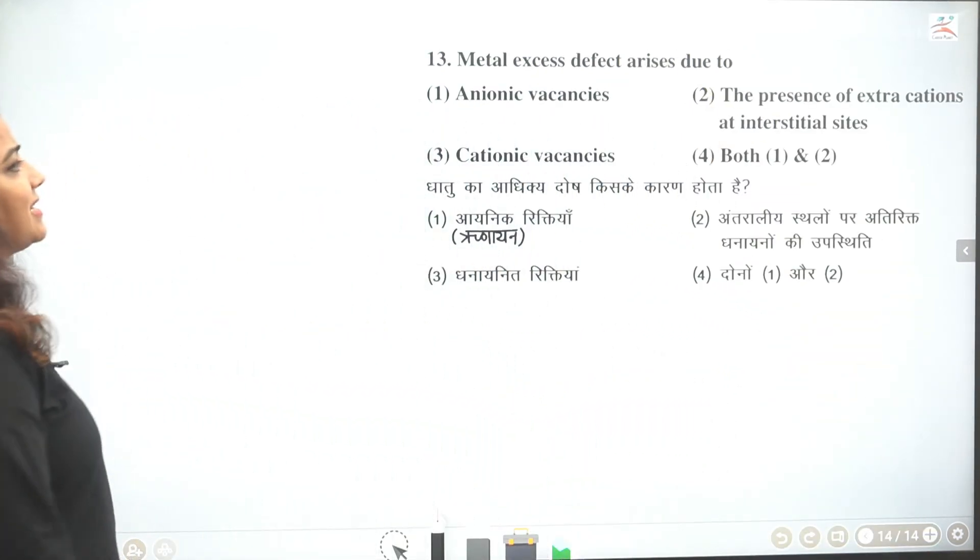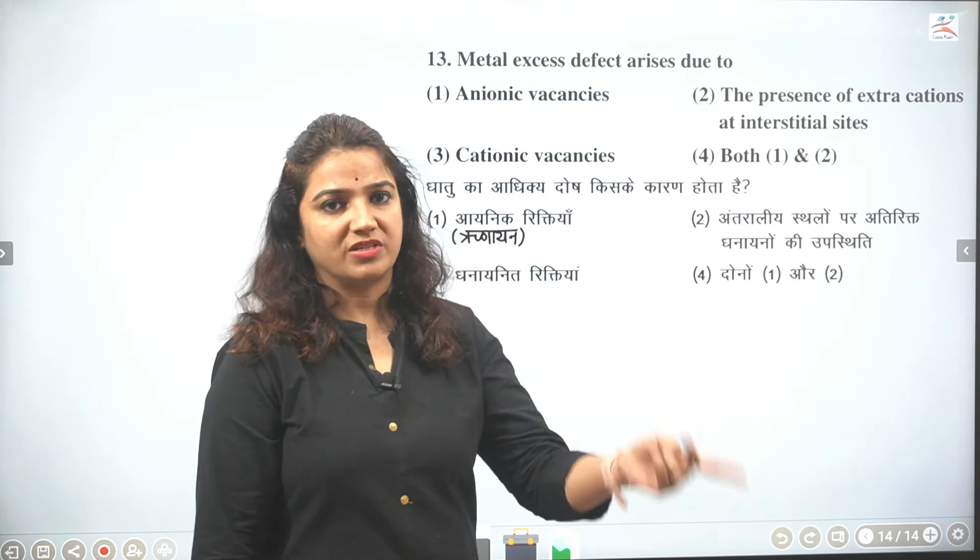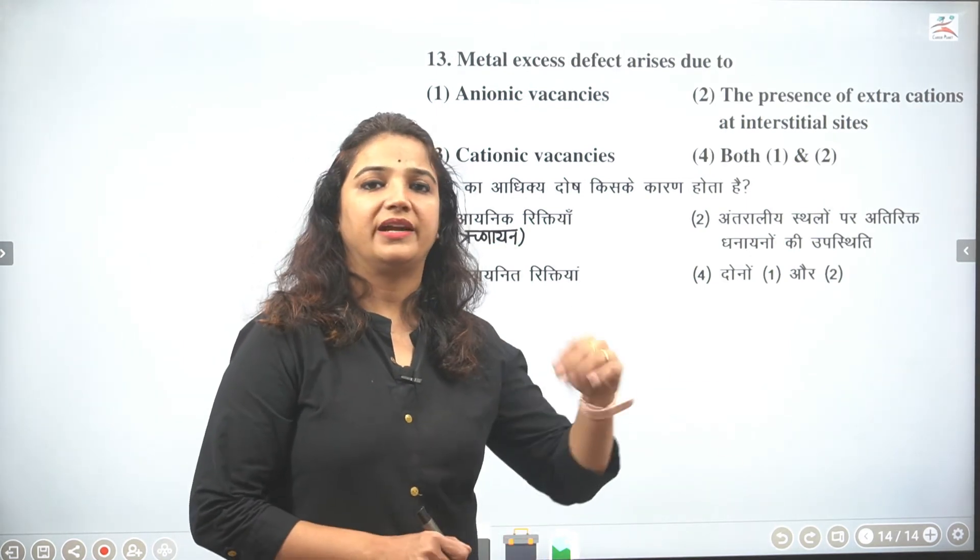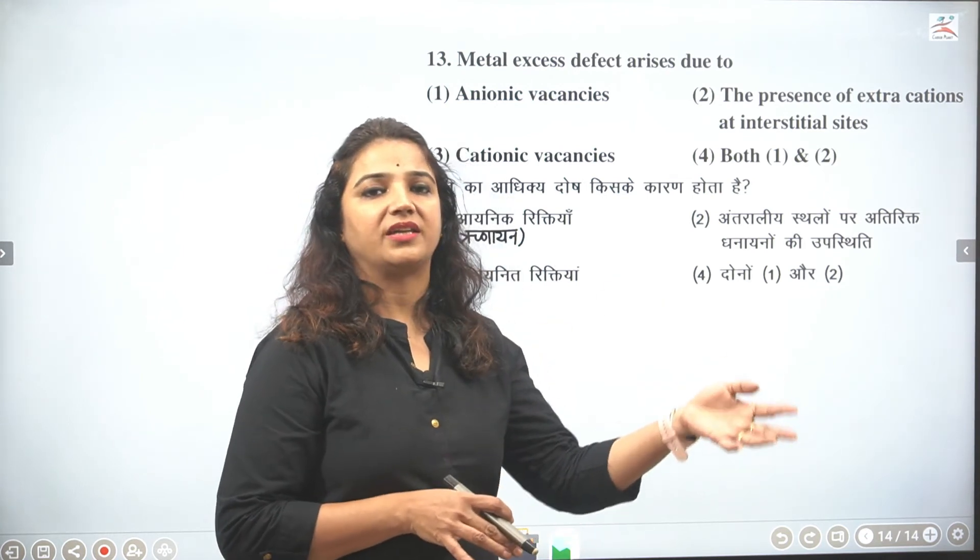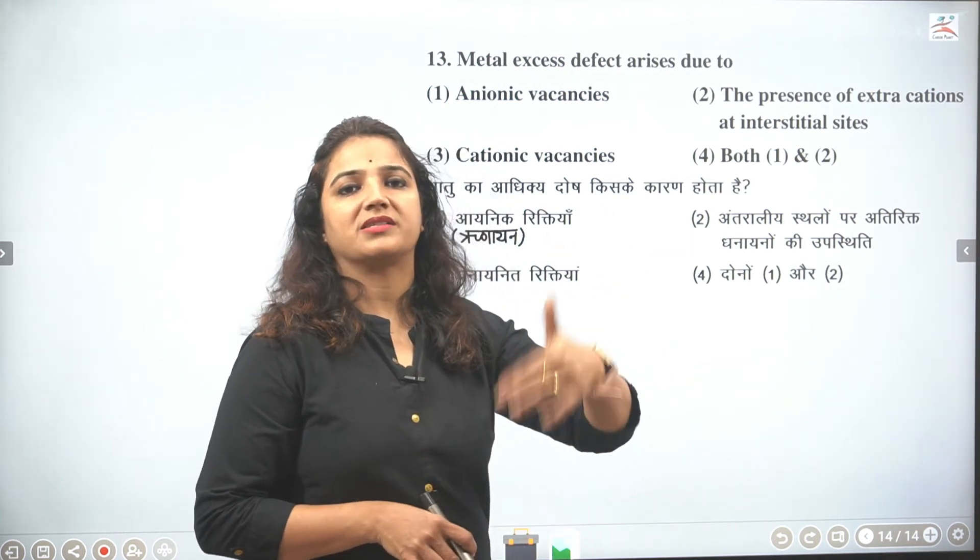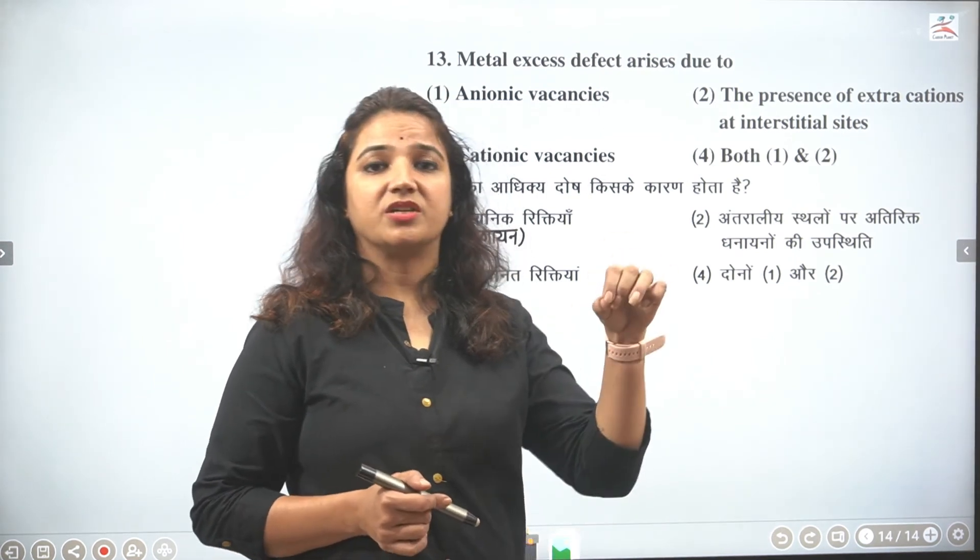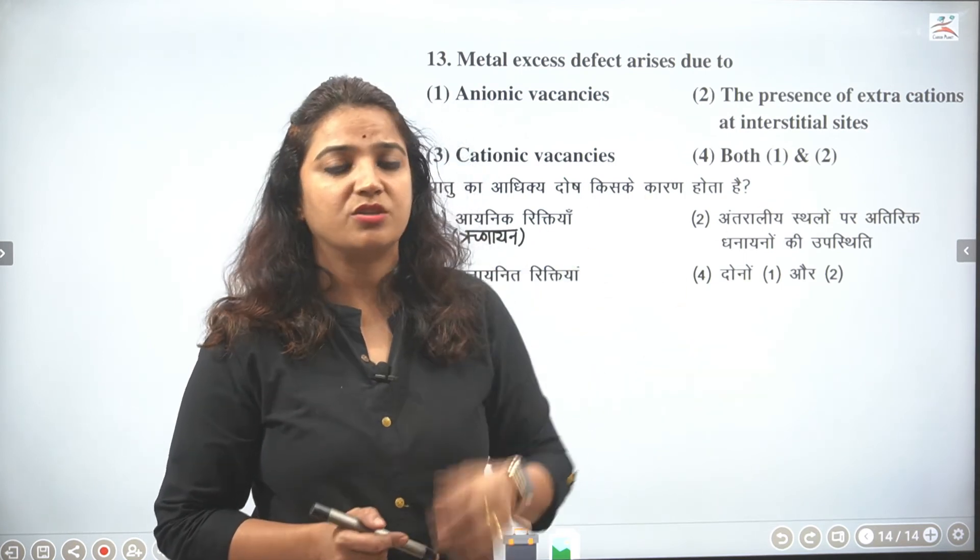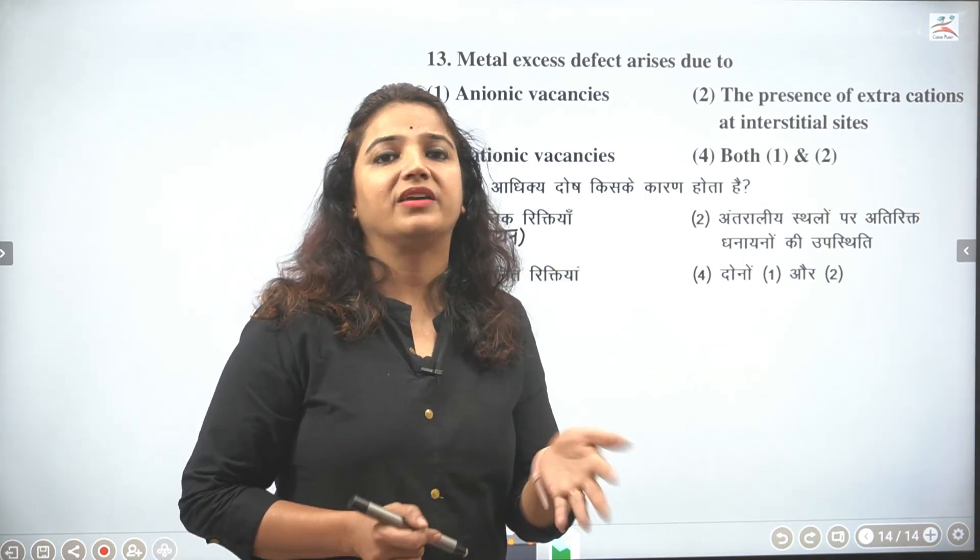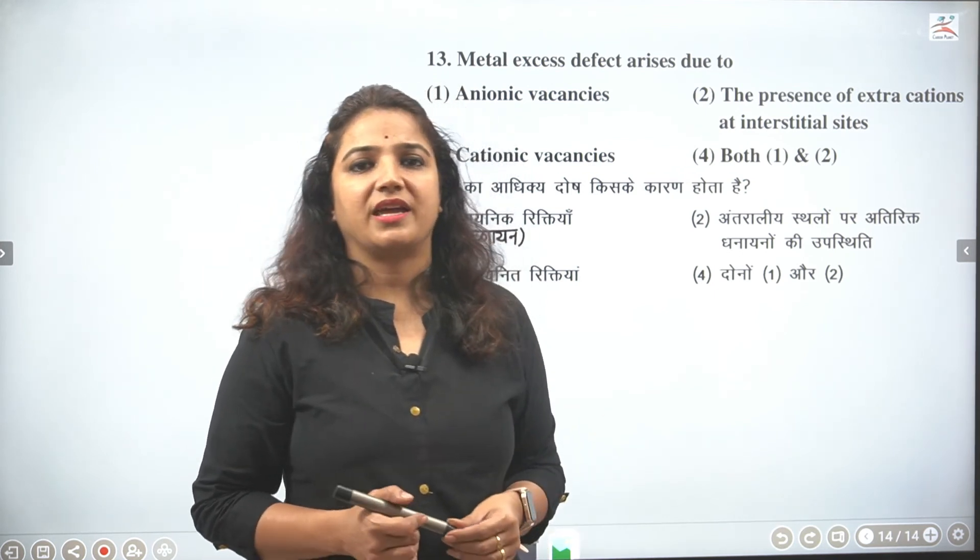Now metal excess defect arises due to. Ab accho metal zyada hai kyunki minus kam hai. Ab iski do wajah ho sakti hai. Ya toh negative part jo hai metal plus aur anion jaise ki anion apni jagah chhodke crystal out of the crystal. Tab bhi ho sakti hai. Toh hum kahenge crystal apni jagah chhodke anion apni space out of the crystal chala gaye. Toh anion vacancy ki wajah se metal zyada ho sakta hai. Aur dusra aisa ho sakta hai ki metal jo hai.